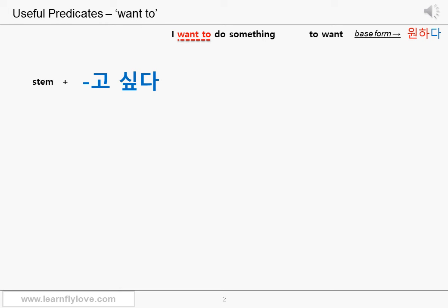고 싶다. When you want to say 'I want to do something,' you add 고 싶다 to the stem of the main verb. This assistant predicate 고 싶다 is used basically with verbs, but people use it with adjectives in many cases these days. So we wouldn't say that you cannot use it with adjectives, but remember that basically you use it with verbs. Again: stem plus 고 싶다.